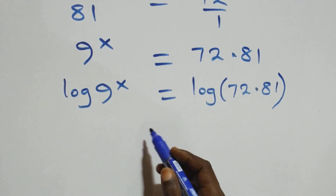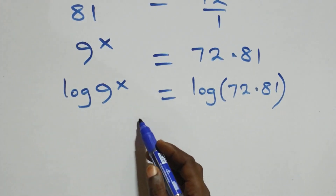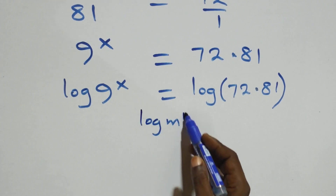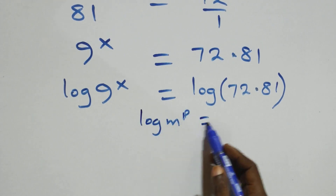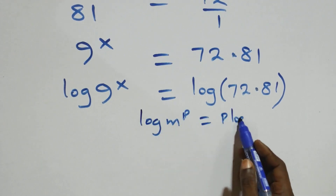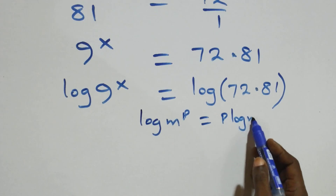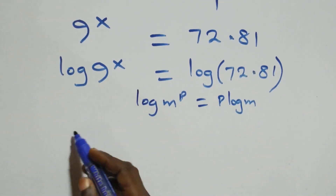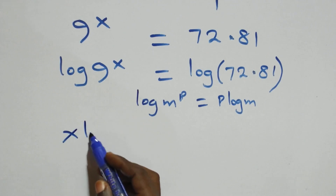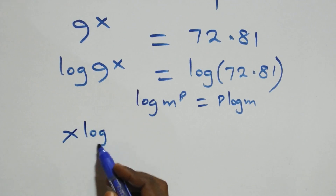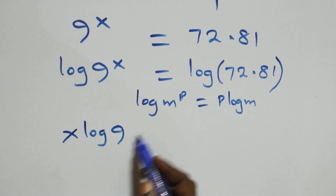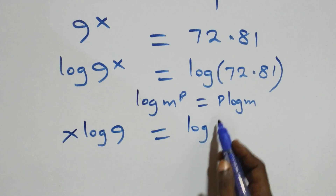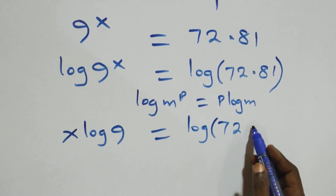We apply the power rule of logarithms: log m raised to power p is the same thing as p·log m. So what we have becomes x·log 9 equals log(72 × 81).